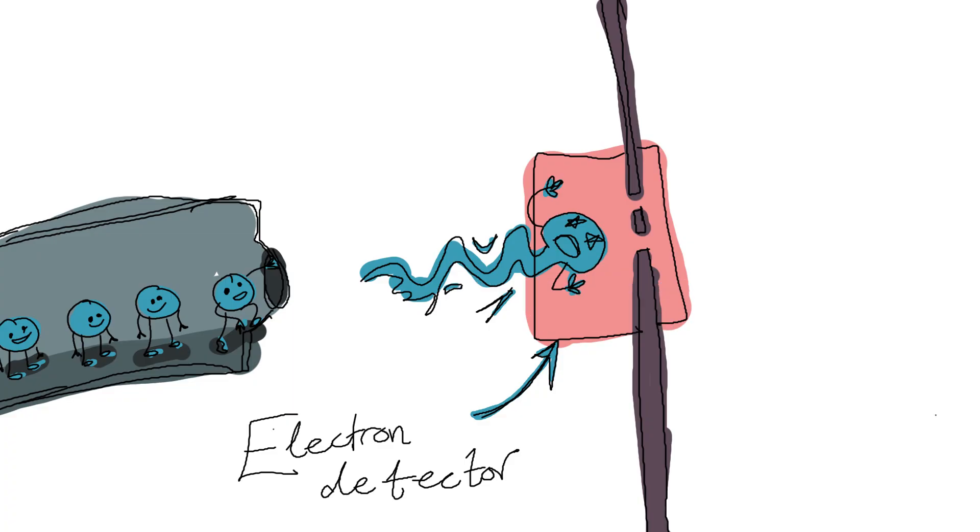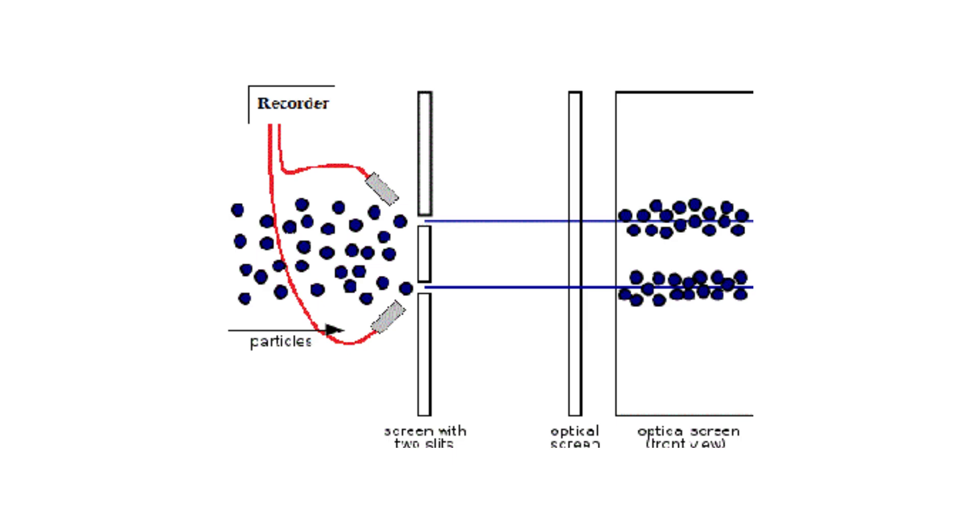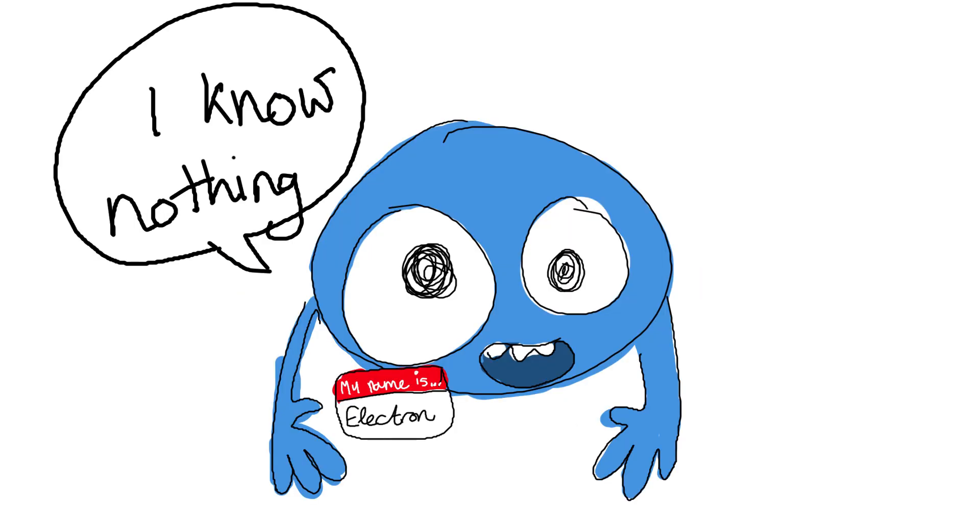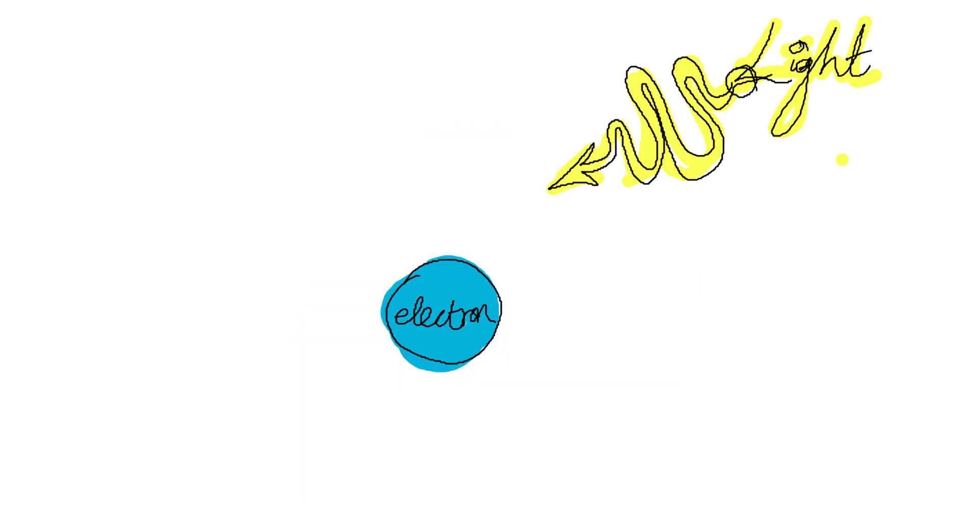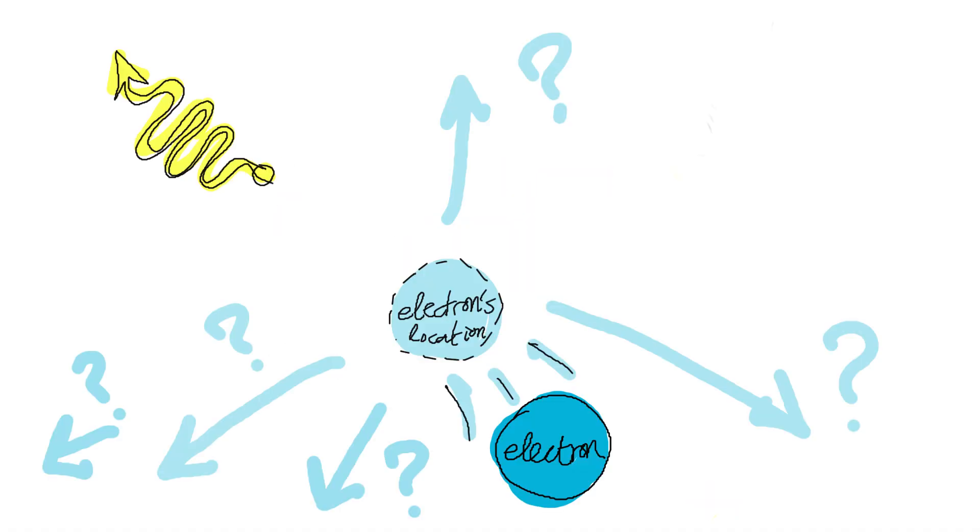However, if you set up a detector to watch which slit each electron goes through, the interference pattern disappears. They now behave like particles again. That doesn't mean that the electron knows it's being watched. It just means that measuring the system changes the behavior, because measurements interact with the particles.